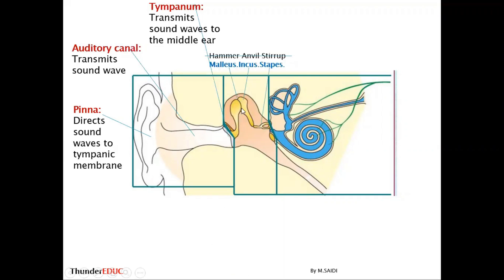The ossicles — the three bones called the malleus, incus, and stapes, abbreviated MIS — amplify the vibration and also transmit the vibration to the oval window. Note that the common names hammer, anvil, and stirrup are correct but we advise using malleus, incus, and stapes in the exam. The ossicles amplify the vibration and transmit it to the oval window.